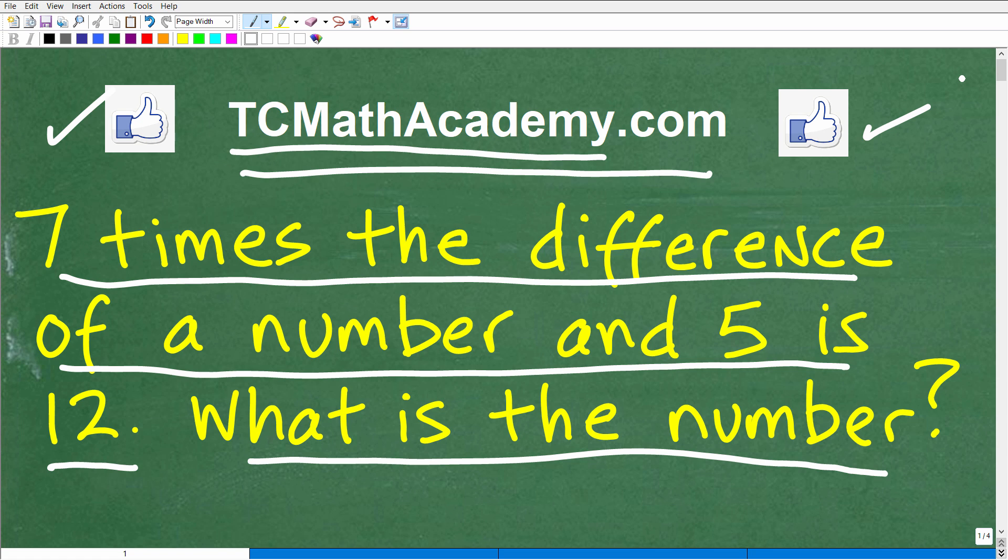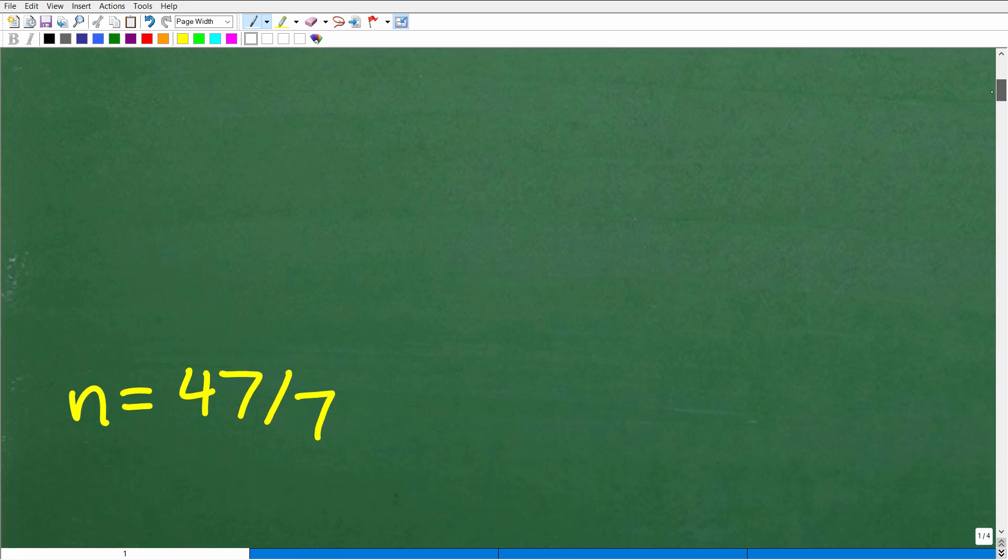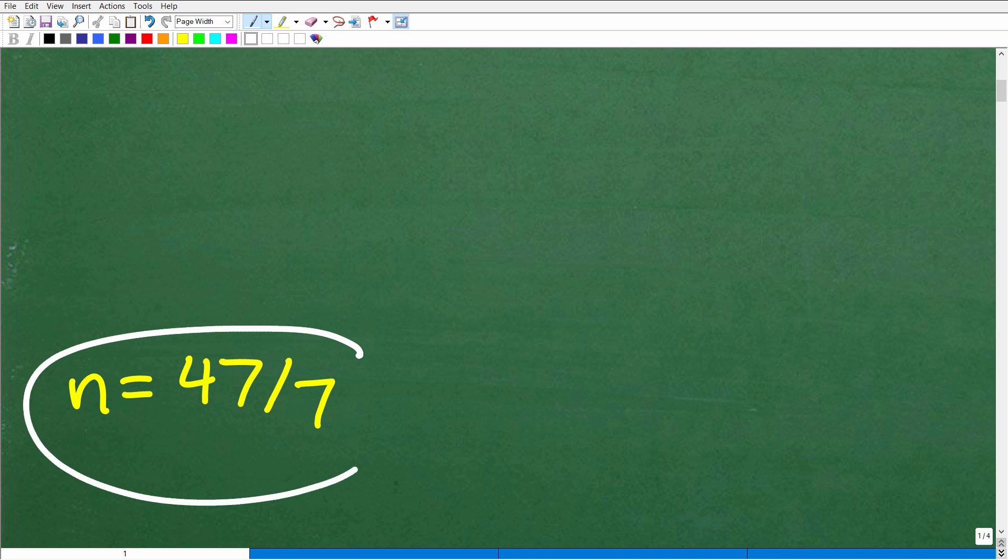Okay, so let's take a look at the answer, and then we'll get into the solution. This is the kind of problem that you would see at the pre-algebra and algebra 1 level. The question is what is the number? This number happens to be 47 over 7.